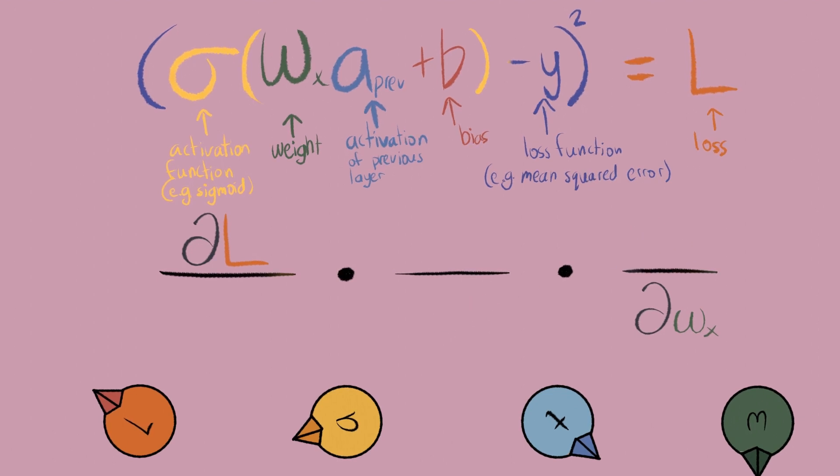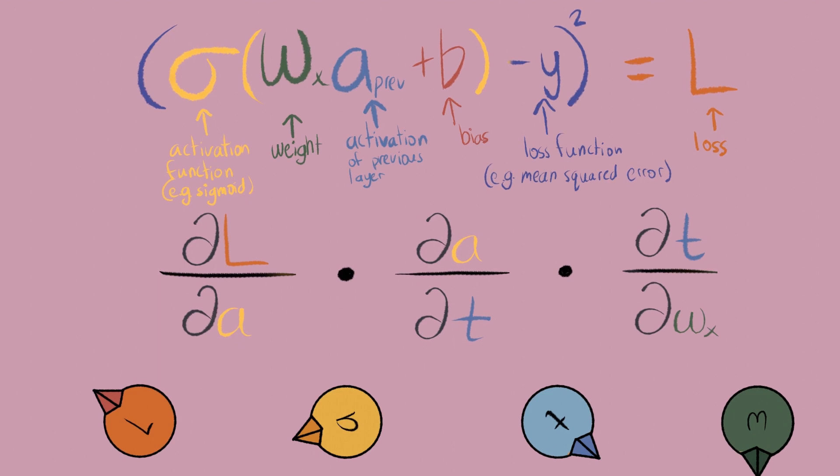You can see that this simplifies down to our original goal of del L over del W, and the informed viewer knows that this is simply the chain rule of calculus.